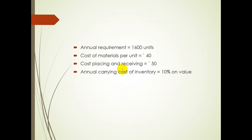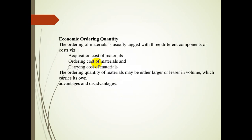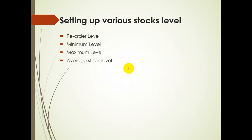In the last session we covered how to calculate economic order quantity, total cost, and the time gap between orders. Today in ROL we'll discuss setting up various stock levels — reorder level, minimum level, maximum level, and average stock level — and what formulas are used for each.